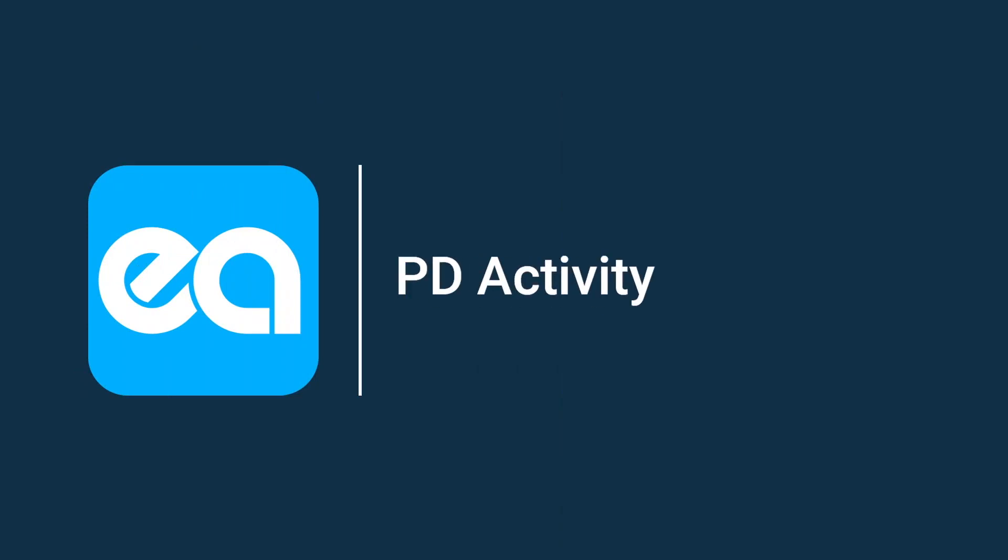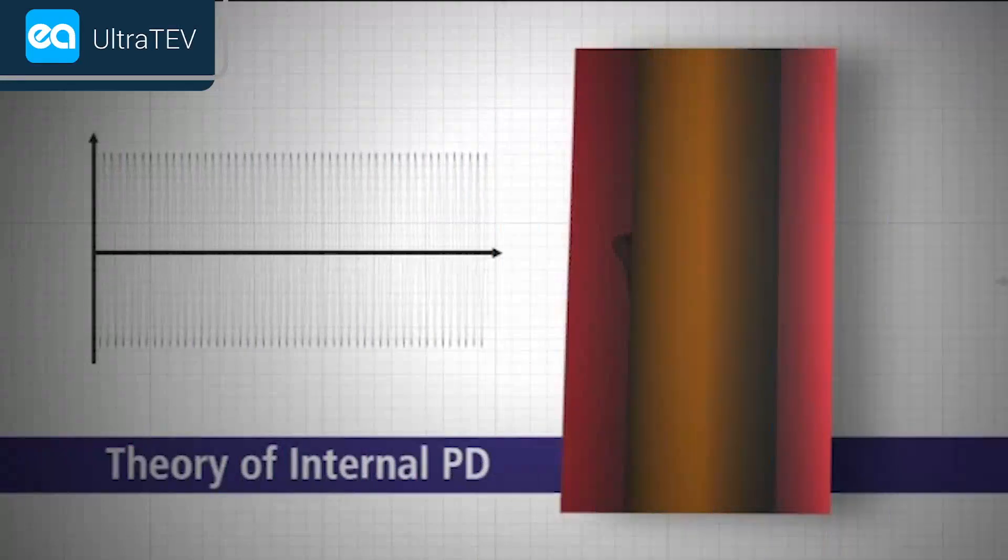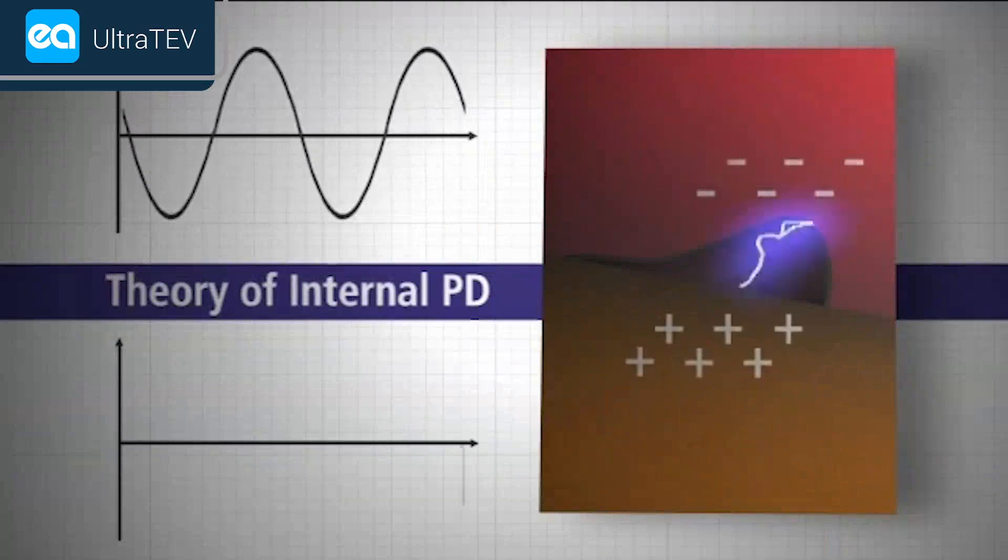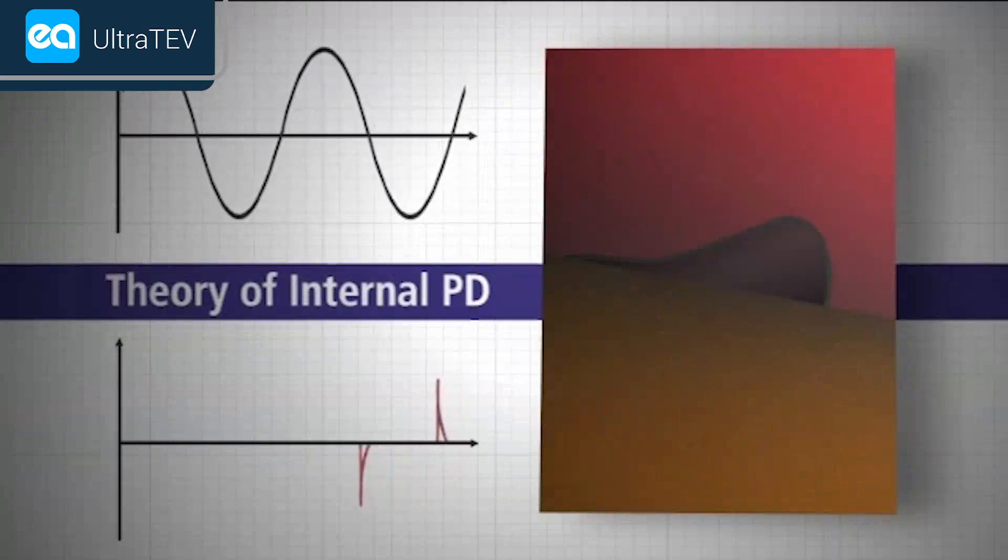PD activity can occur at any point in the insulation system where the electric field strength exceeds the breakdown strength of that portion of the insulating material.